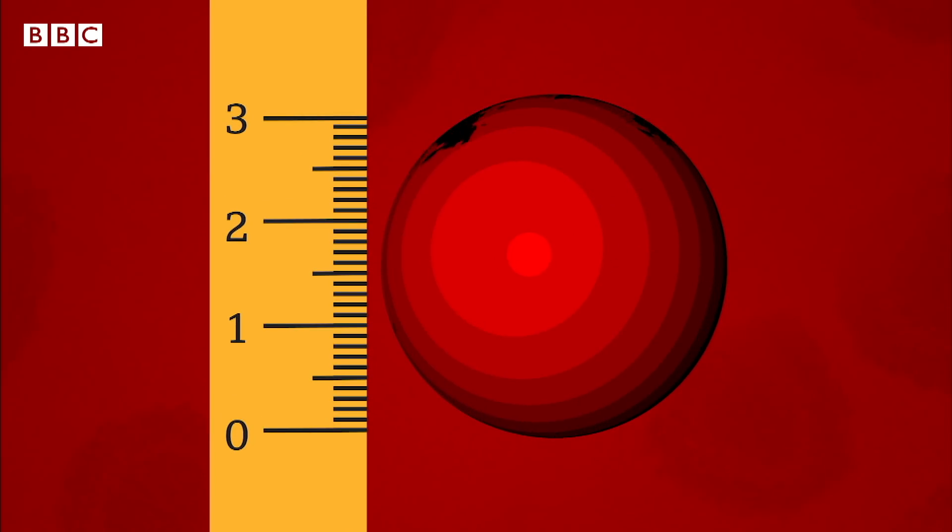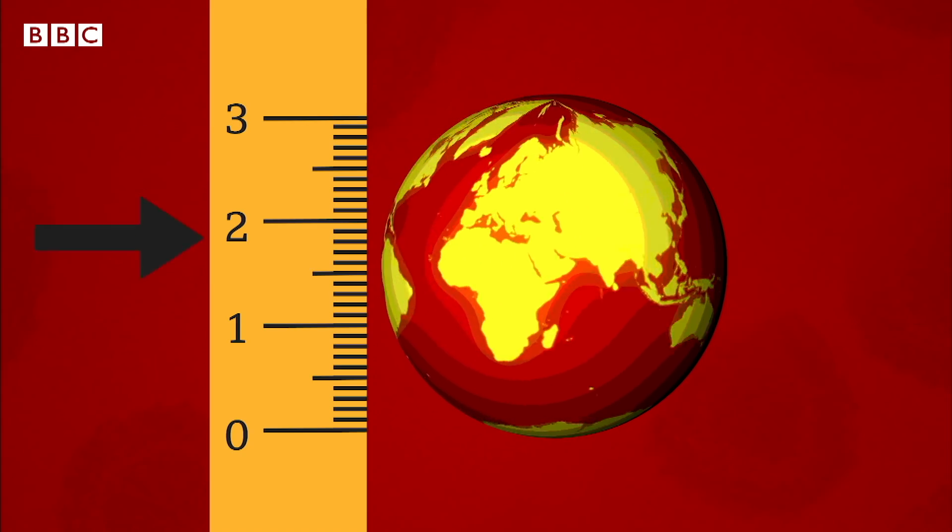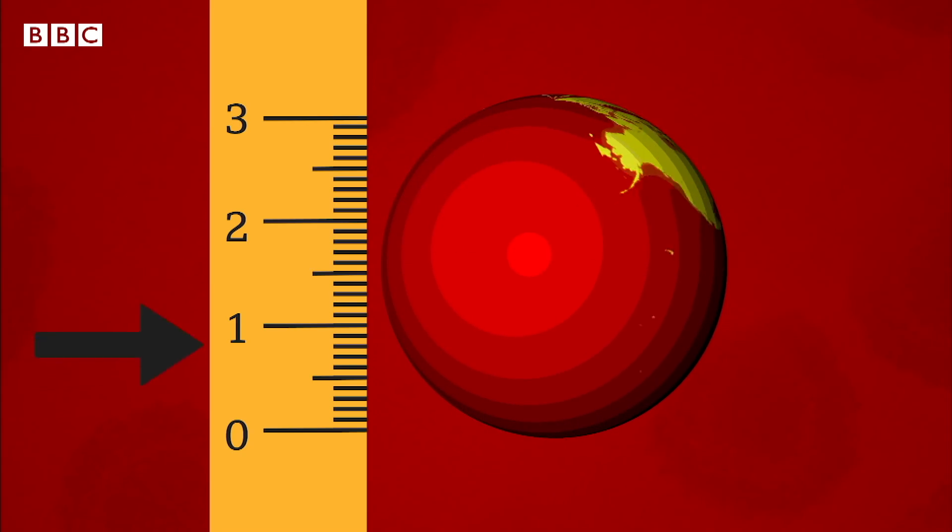Before changes were brought in to reduce the spread of coronavirus, its R number was between two and three, which is why it spread so quickly. The aim is for it to be less than one and to keep it there so health services can cope.